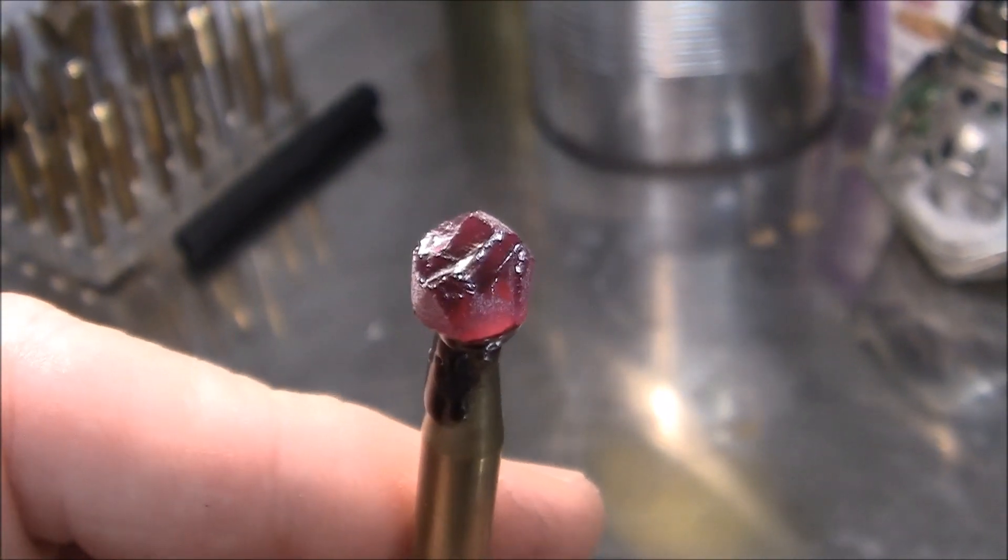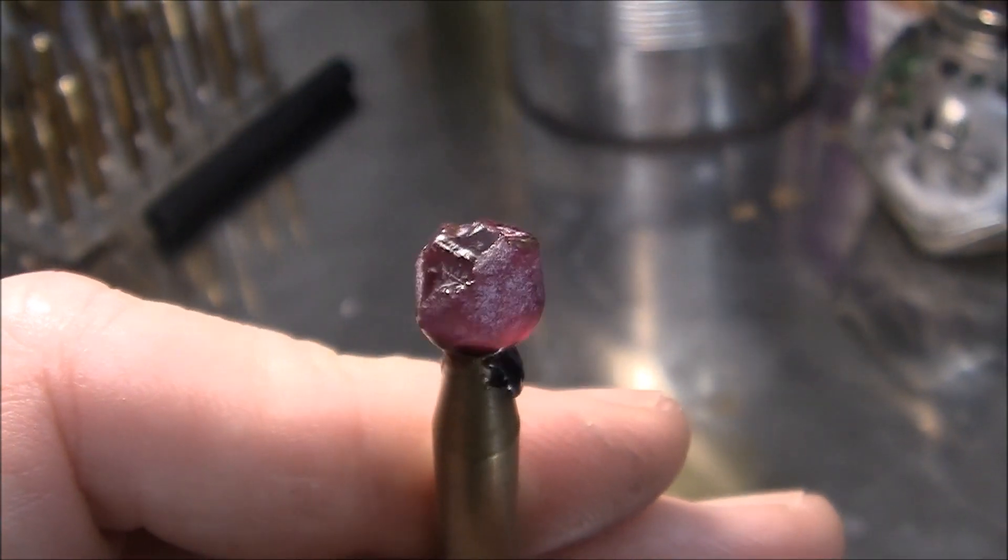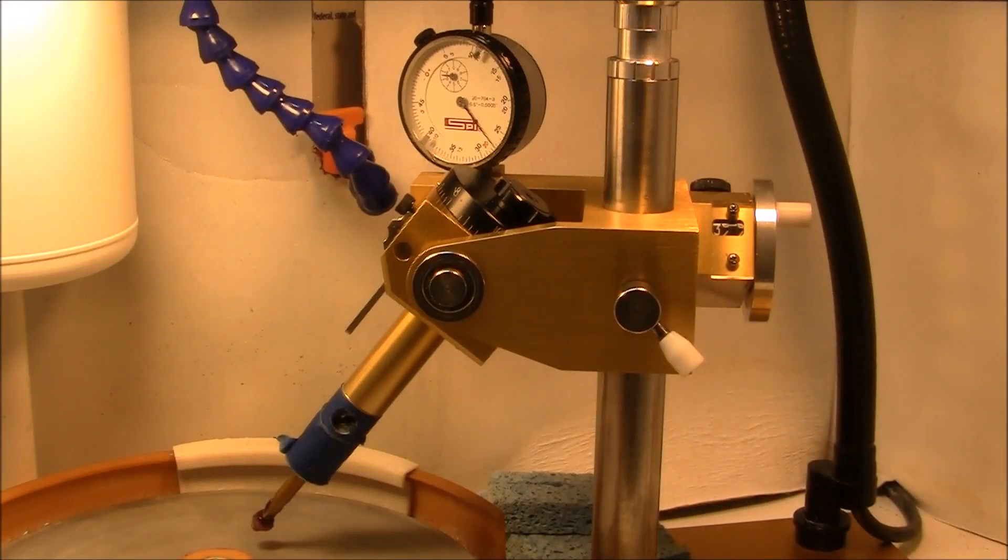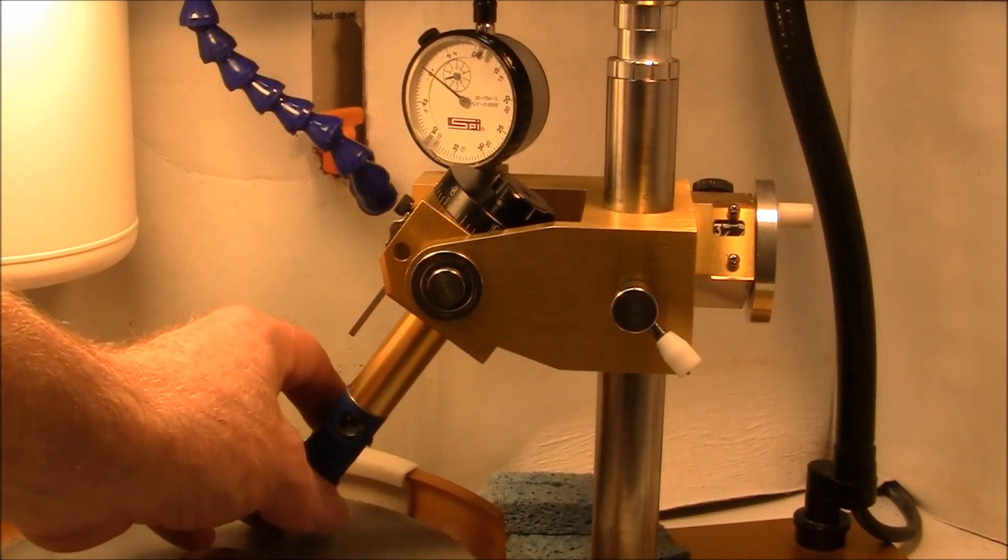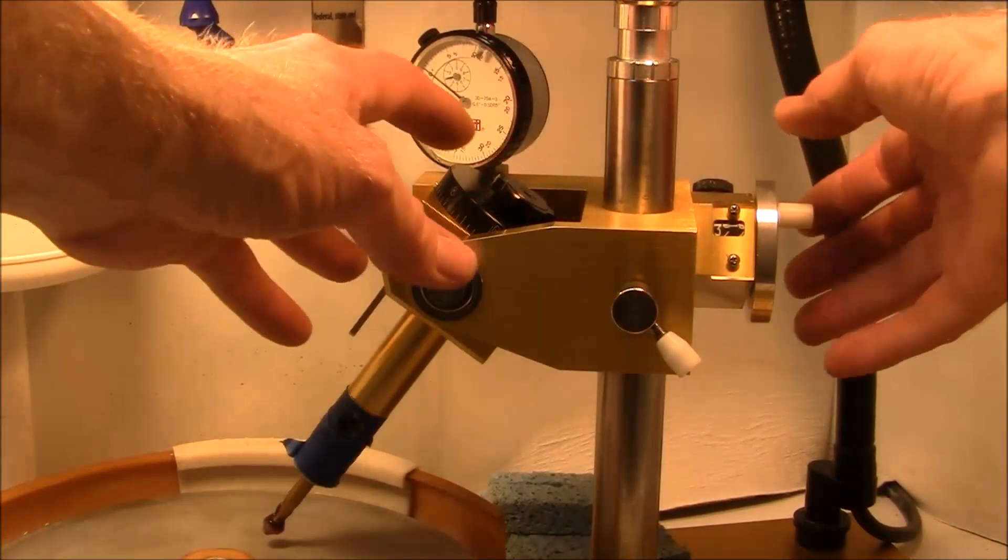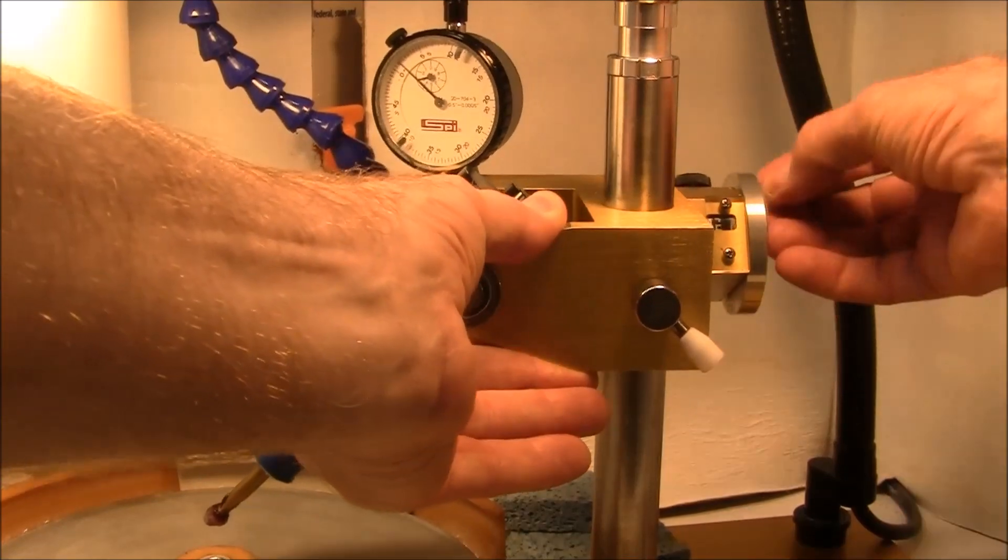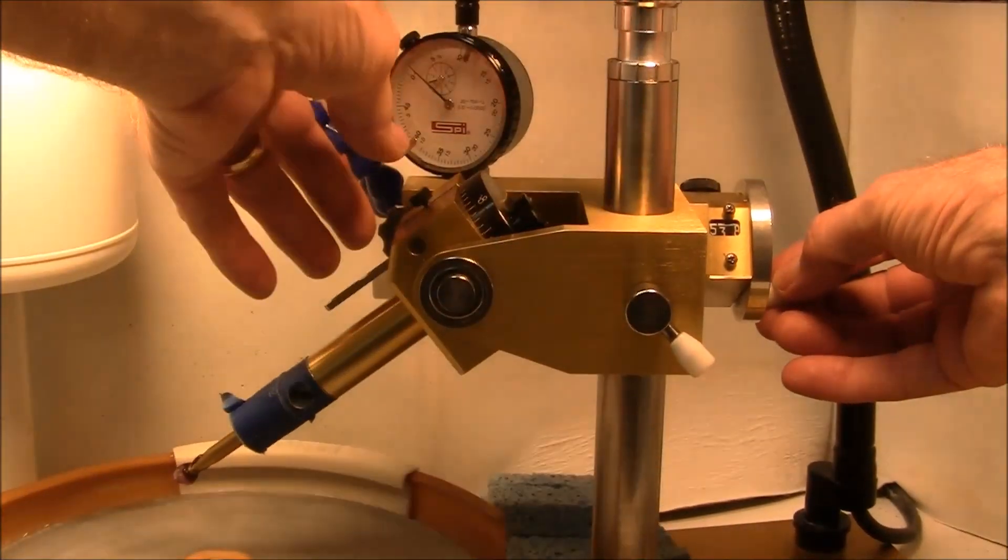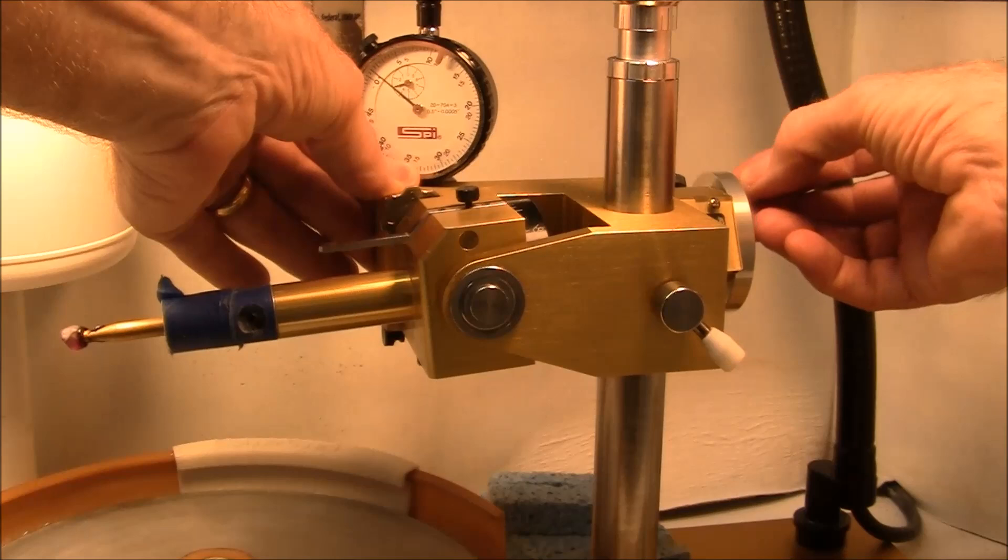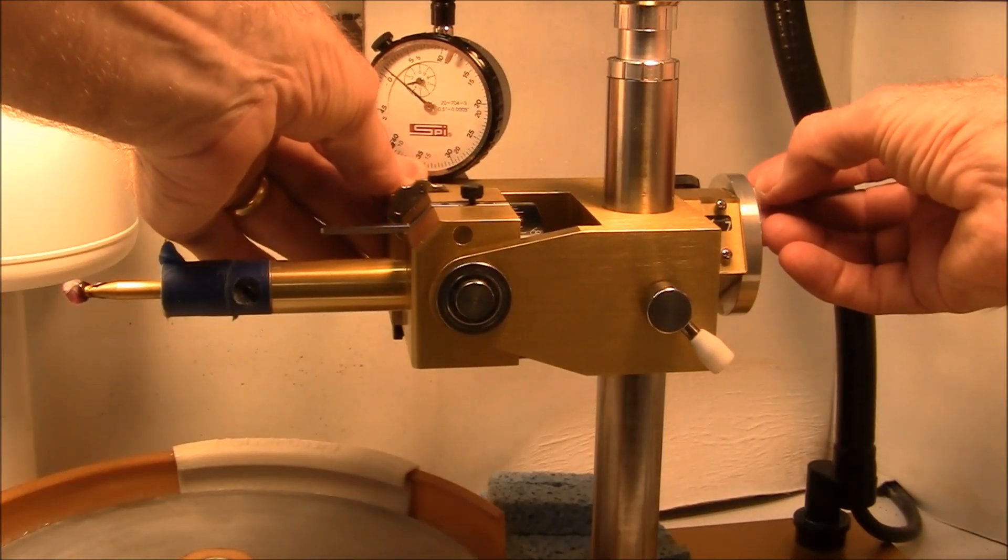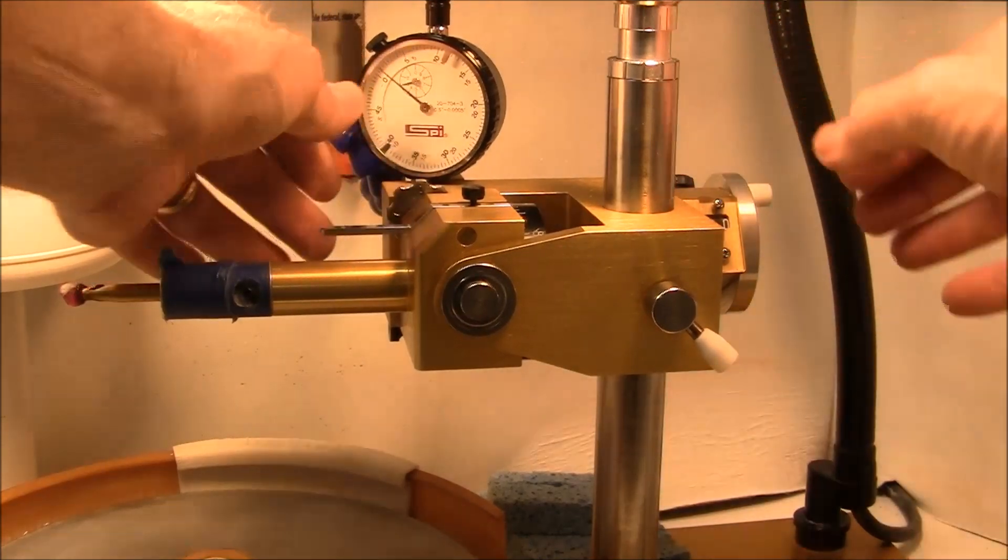We'll start cutting and we'll start rounding the stone first on the machine. The dopped stone has now been inserted into the coil of the machine, and I'm going to set the machine's angle at 90 degrees.